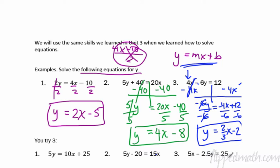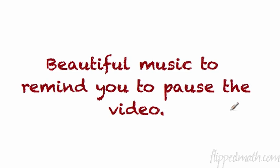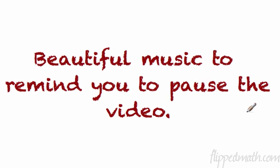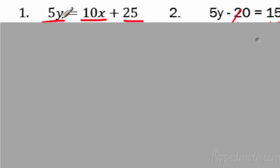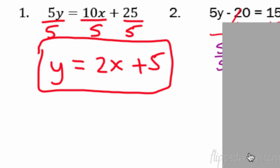I've selected three problems for you to try — pause the video and try them yourself. Number 1 is like the first example, number 2 is like number 2, and number 3 is like number 3. For number 1, all you have to do is divide everything by 5 and simplify those numbers. That gives Y equals 2X plus 5.